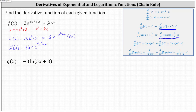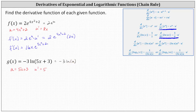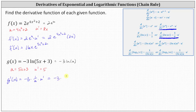So again, for our function g of x, u is equal to five x plus three, and therefore u prime is equal to the derivative of five x plus three, which is five. If it's helpful, we can think of the given function as just negative three natural log u, which indicates g prime of x is equal to negative three times one over u times u prime. Bringing this back in terms of x, we have negative three times one divided by the sum of five x and three times u prime, which is five.